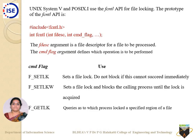File and record locking is one of the most important concepts in Unix as an operating system, and from an examination point of view as well. To set this locking, you use the fcntl API, which you have already covered. The same fcntl API is used to set or release locks. The fcntl API takes three or more arguments: the first is the file descriptor value, the second is the command flag value, and the third is entirely dependent on the second argument.